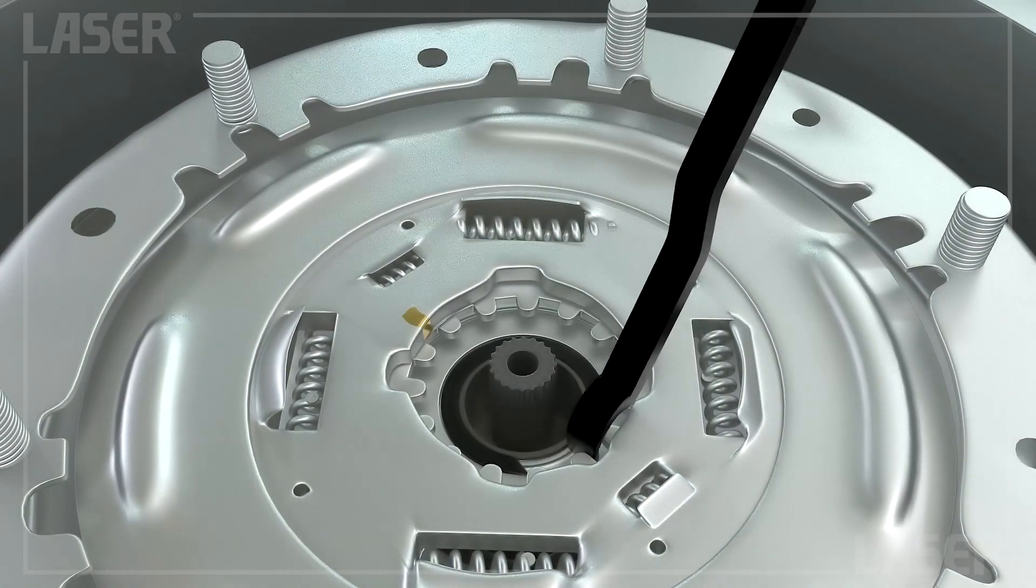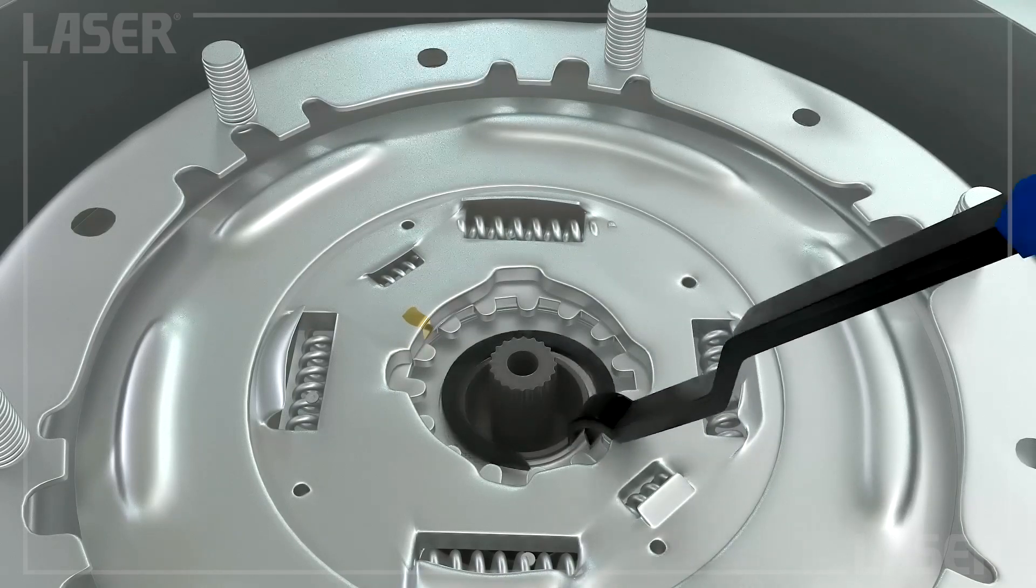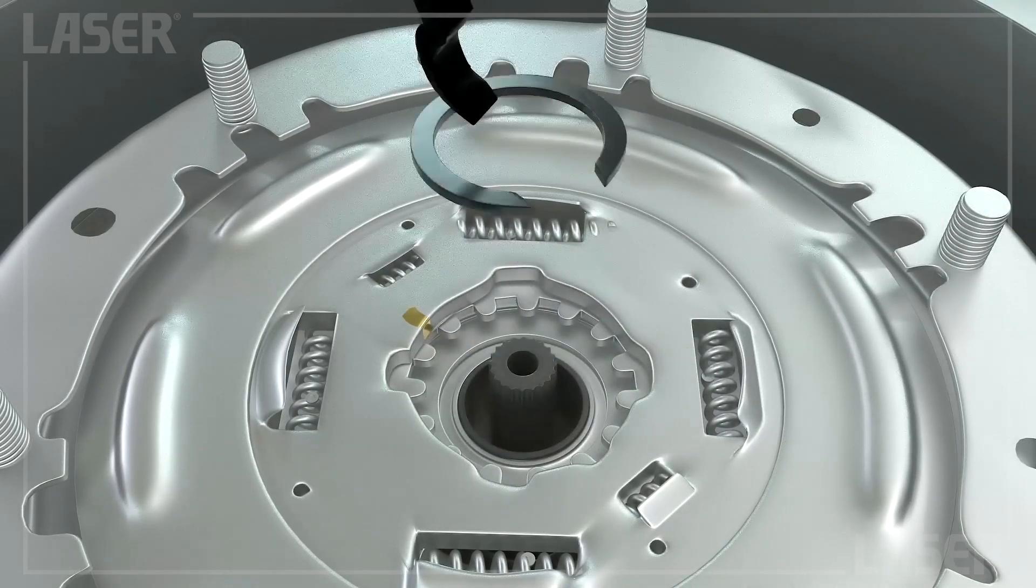Now you are ready to remove the snap ring holding the clutch pack. Again, use Laser 7877 to do this.